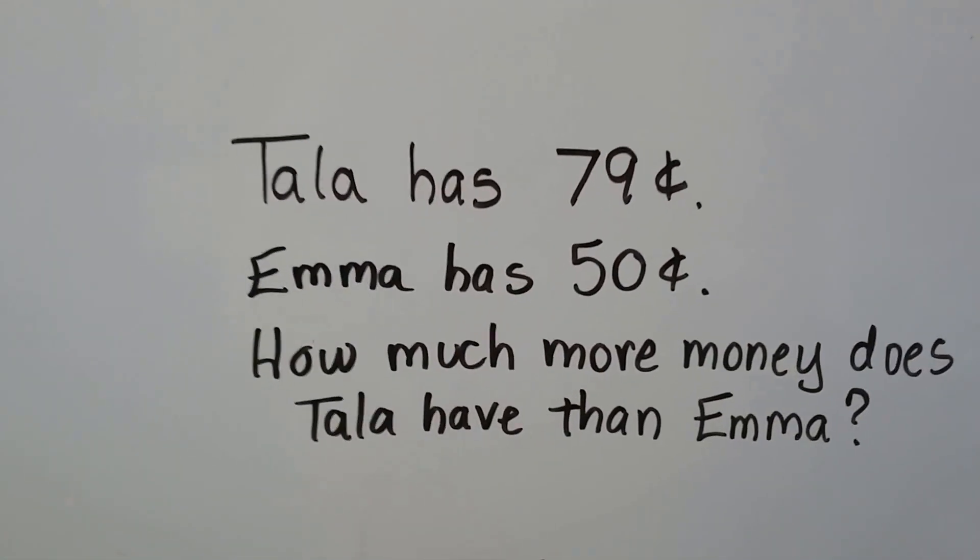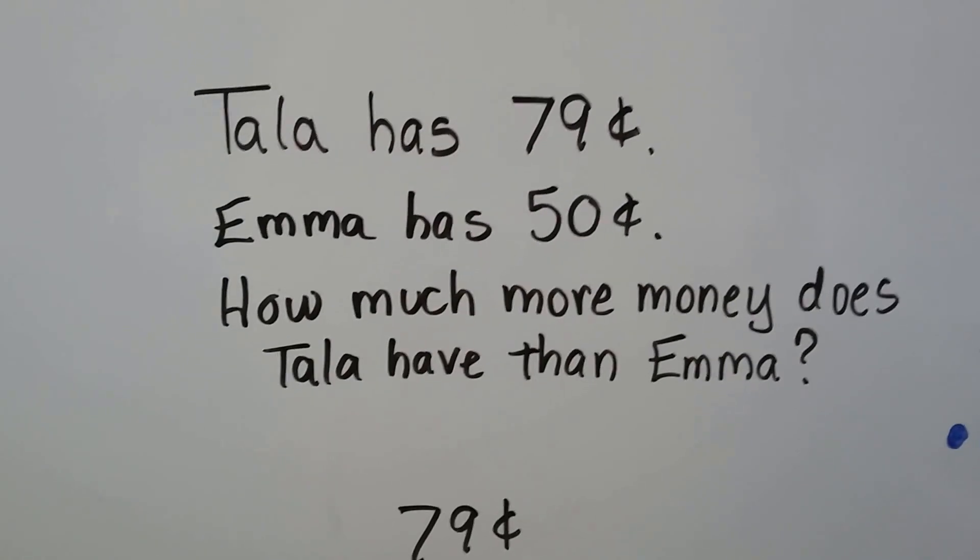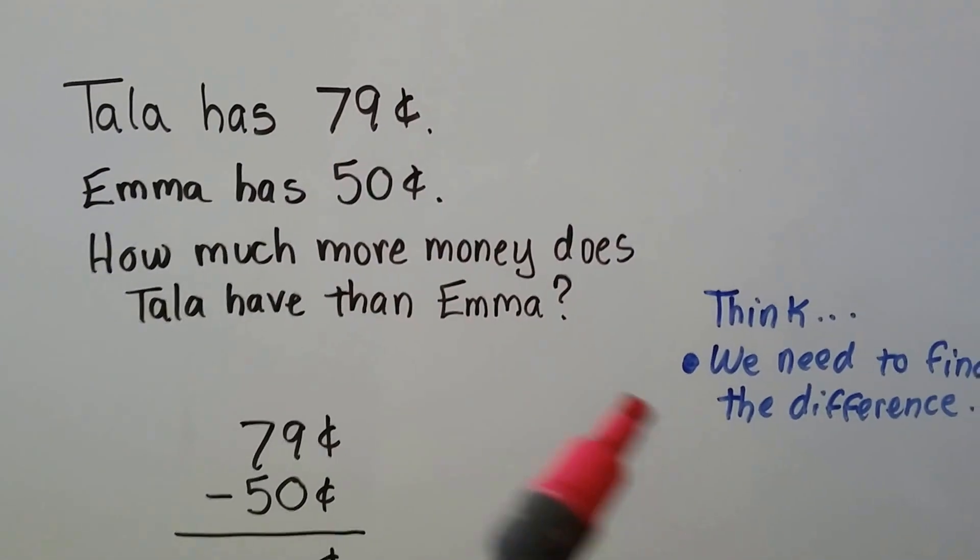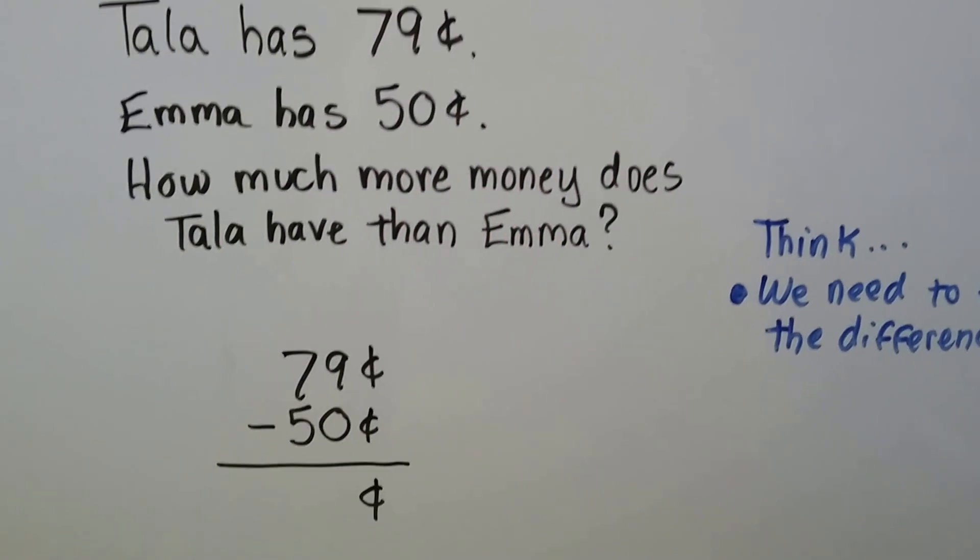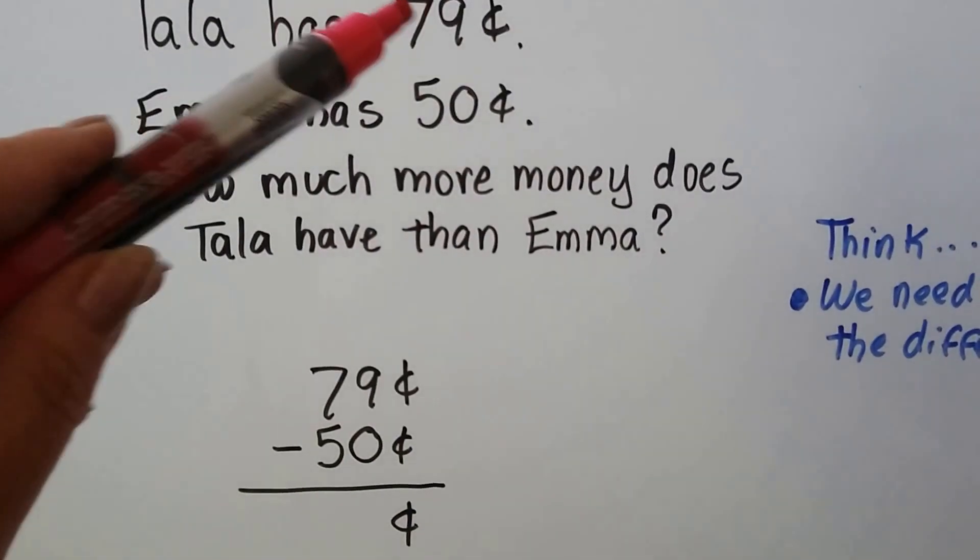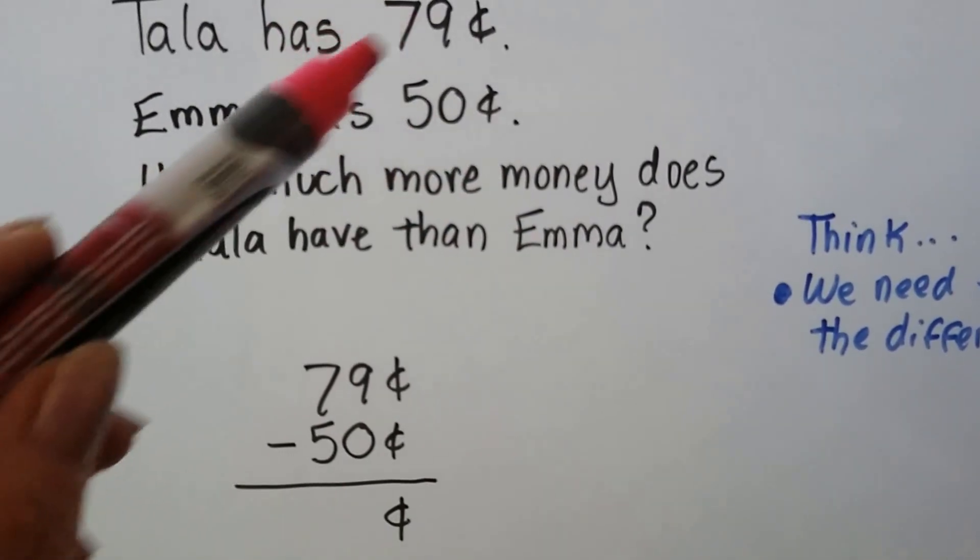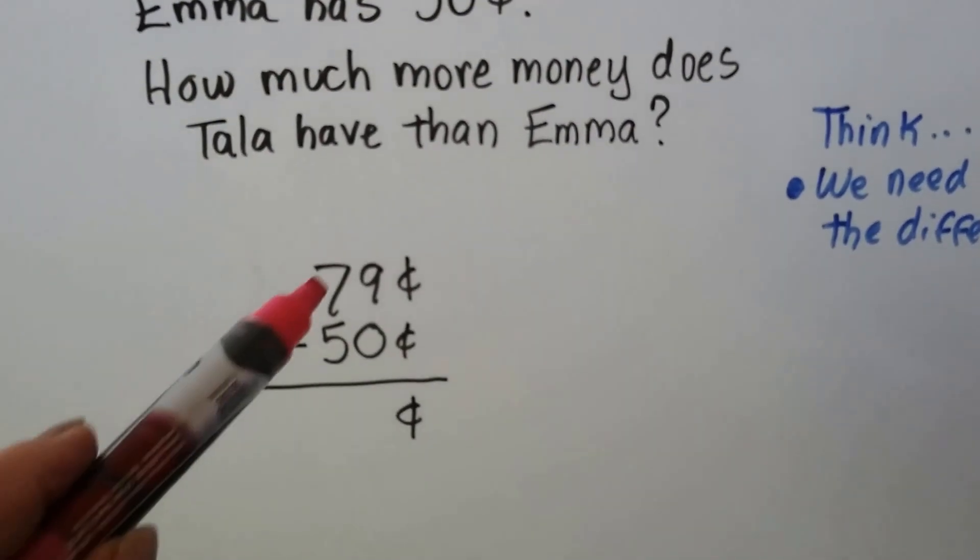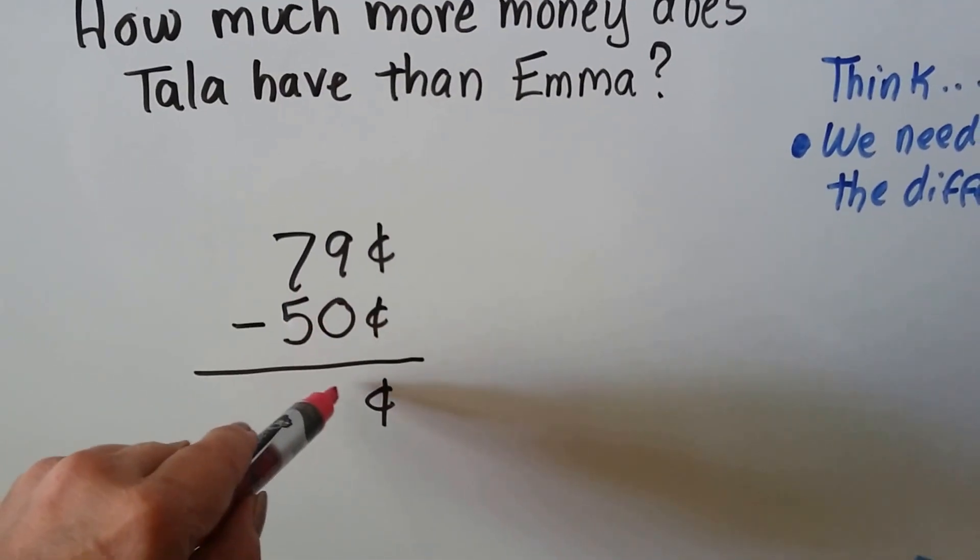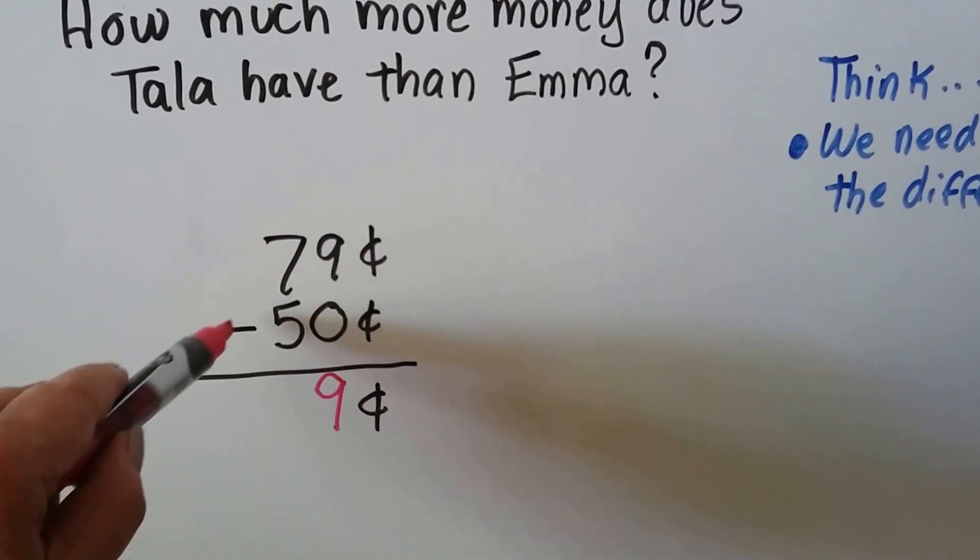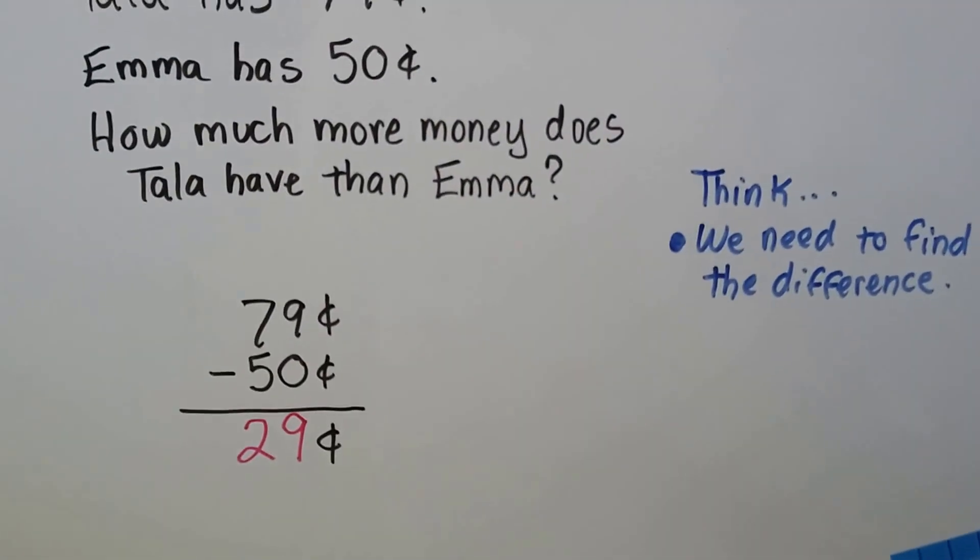Tala has 79 cents. Emma has 50 cents. How much more money does Tala have than Emma? So we think. We need to find the difference between Tala's money and Emma's money, don't we? To find out how much more Tala has. The important numbers are 79 and 50. And if we need to find out how much more, that means we have to subtract. Those are our clue words. We do 79 minus 50. And 9 take away 0 is 9, and 7 take away 5 is 2. Tala has 29 cents more than Emma.